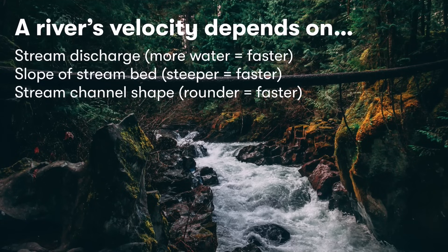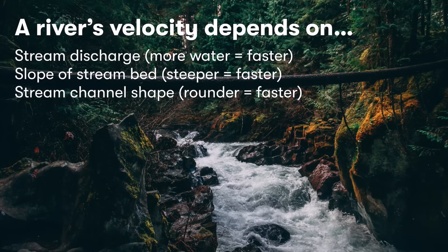Finally, the shape of the stream channel plays a major impact. A narrow, V-shaped or U-shaped channel allows water to flow faster than a very wide, flat-bottomed bed. The reason is that the more area where water flows over the rocky stream bed, the slower it goes due to surface friction. A rounder, deeper, more V-shaped channel produces less friction and faster flow versus a wide, flat channel.